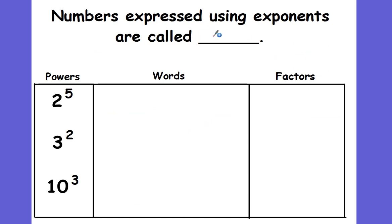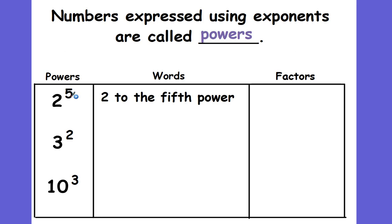Numbers expressed using exponents are called powers. There's a certain way that you say these powers. If you have a base of 2 with the exponent of 5, like we just had, the words would be '2 to the 5th power.' 2 is the base; we're raising it to the 5th power. And what does this mean? It means 2 times 2 times 2 times 2 times 2. We can expand it — kind of like blowing up a balloon, you expand it and write it the long way.